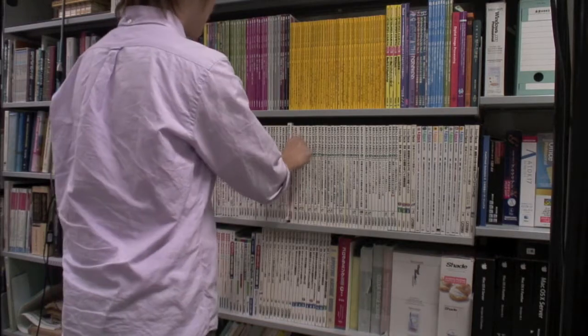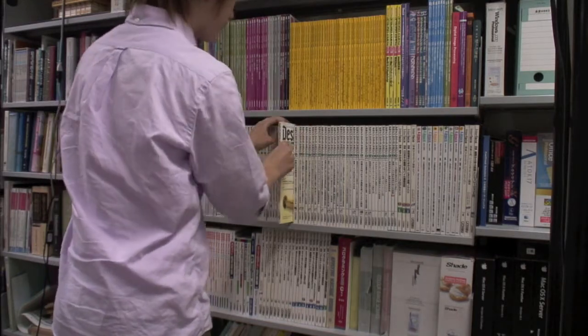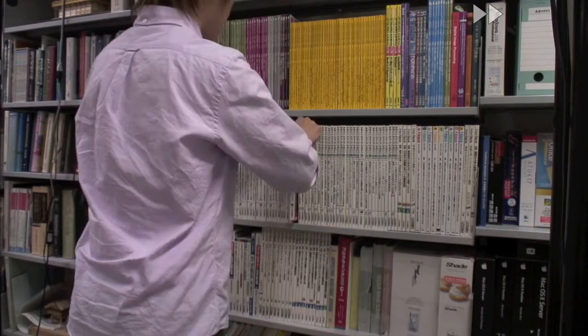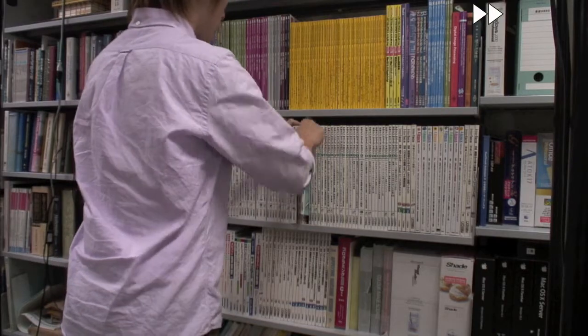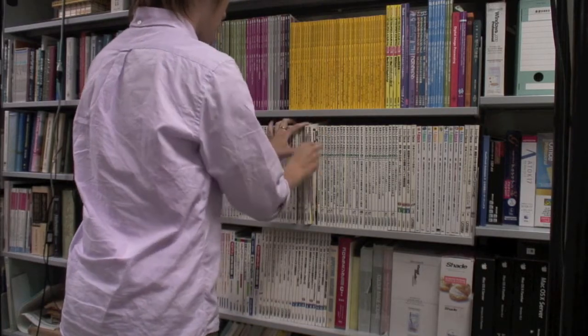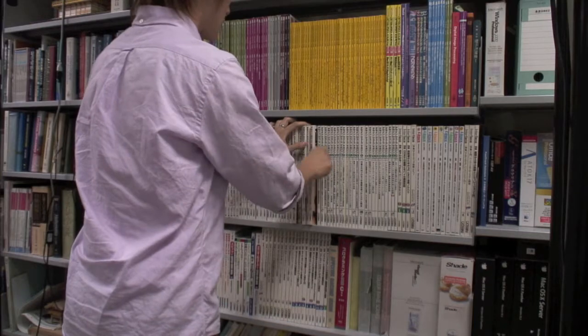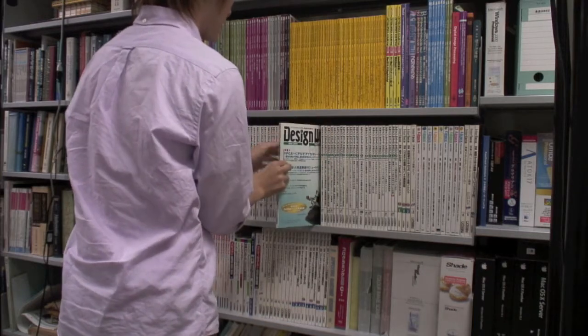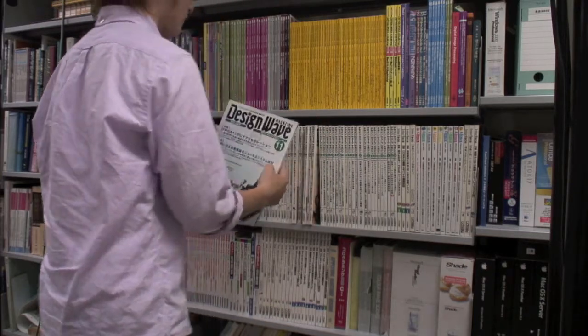When searching for a book in a bookshelf, the titles printed on the book spine are not always sufficient for the search. Then, every book needs to be taken out of the bookshelf to look for details such as those printed on the book cover until the desired one is found.